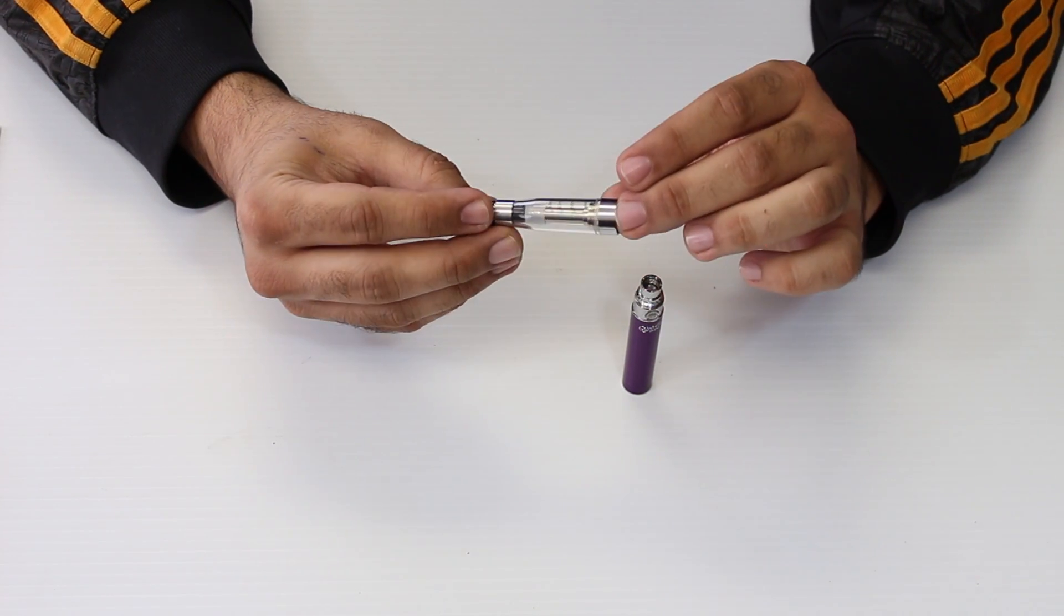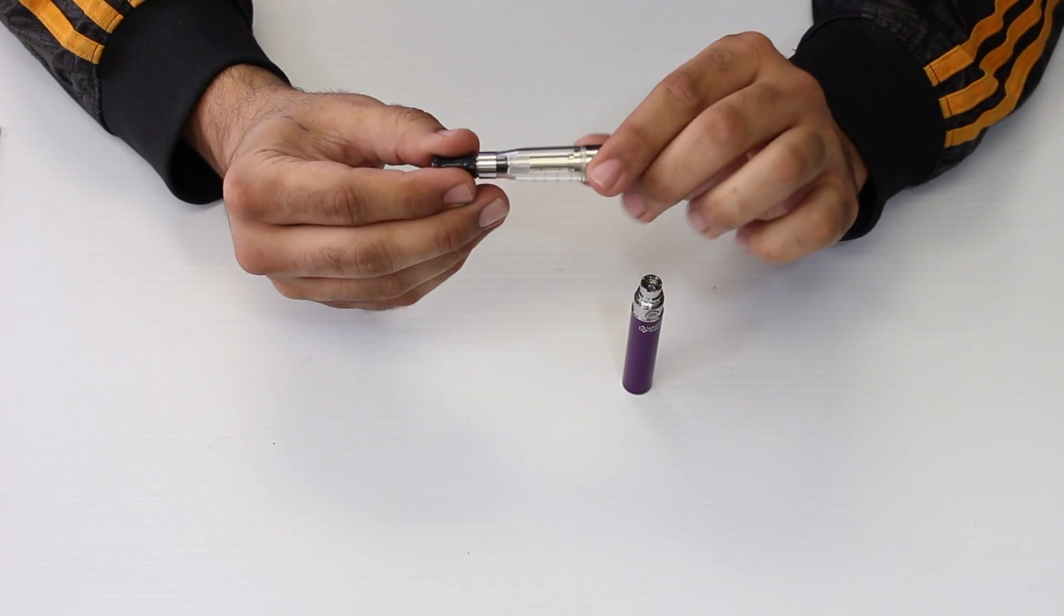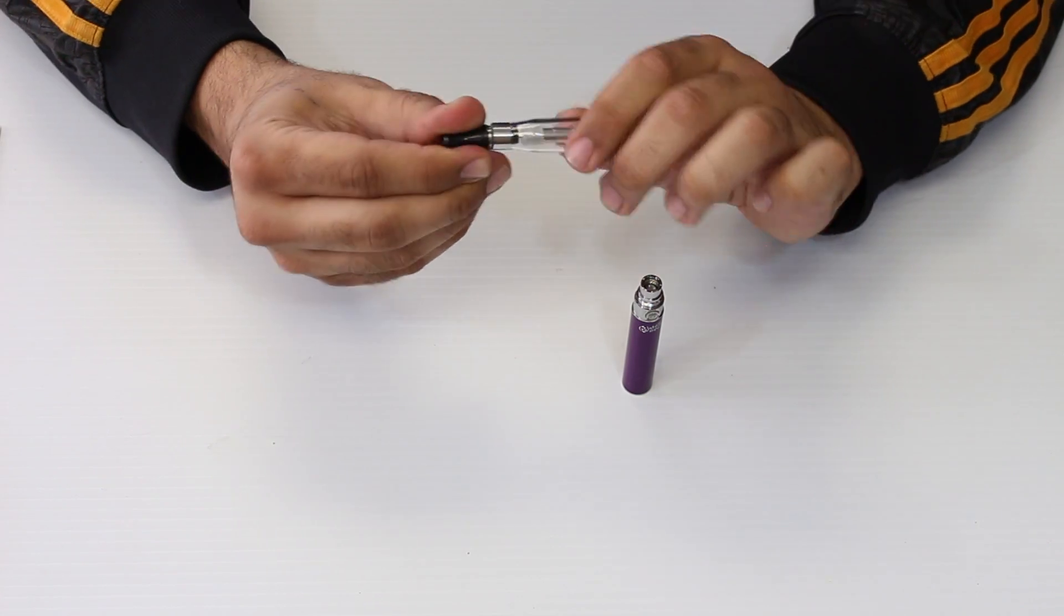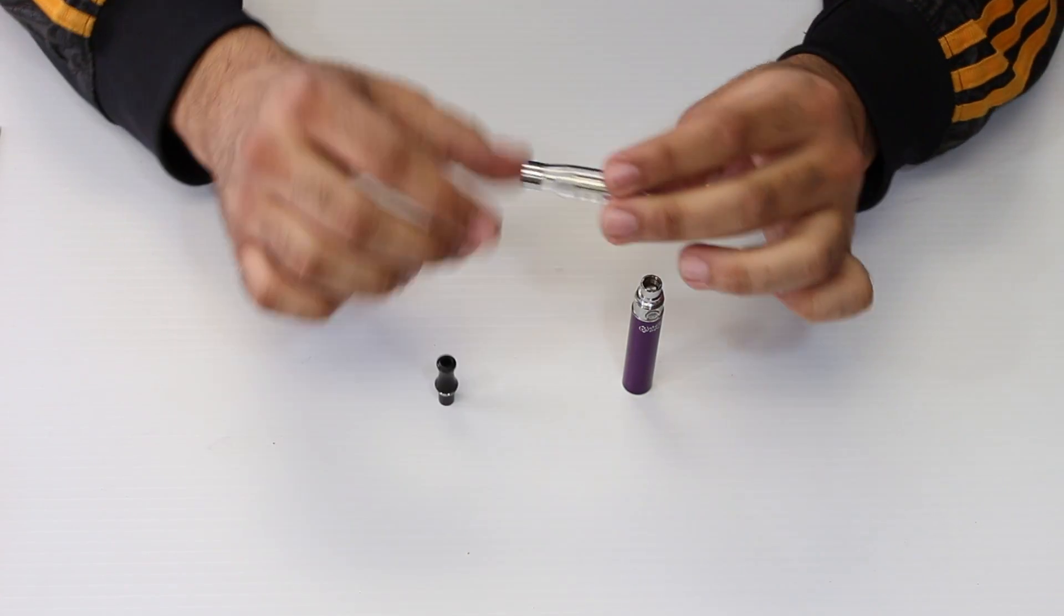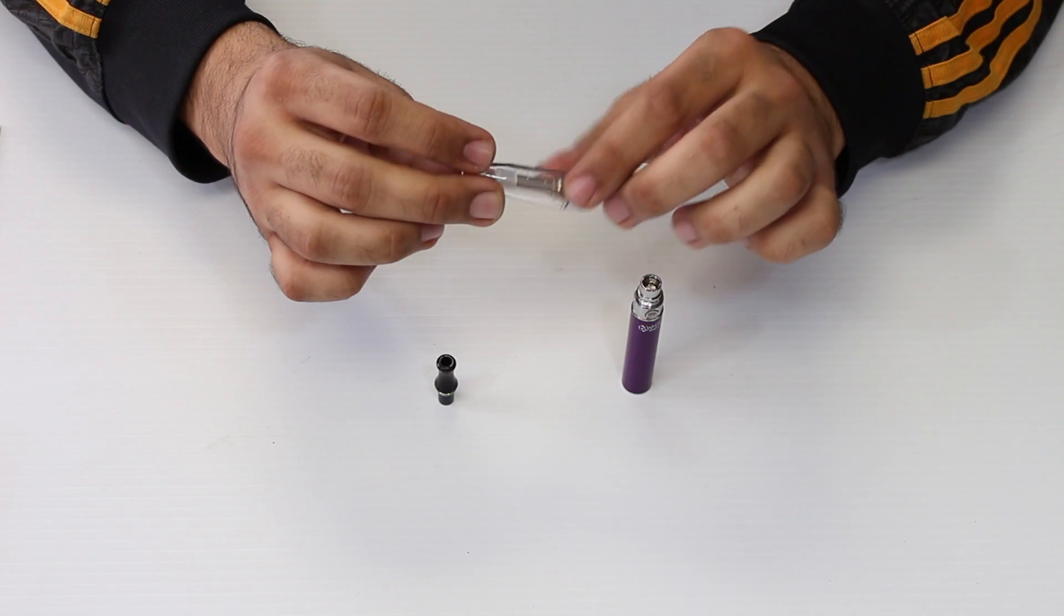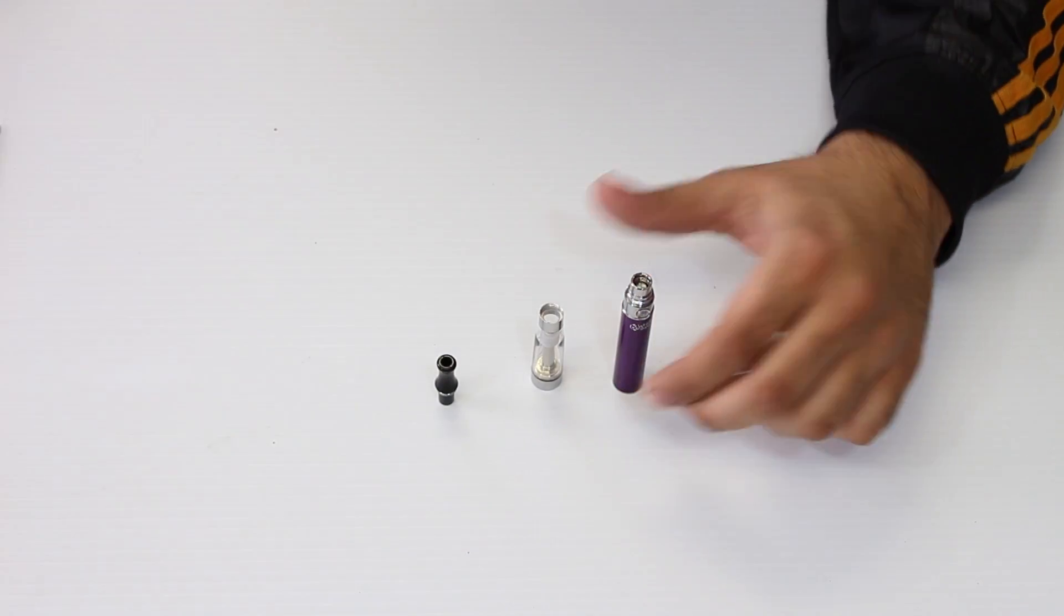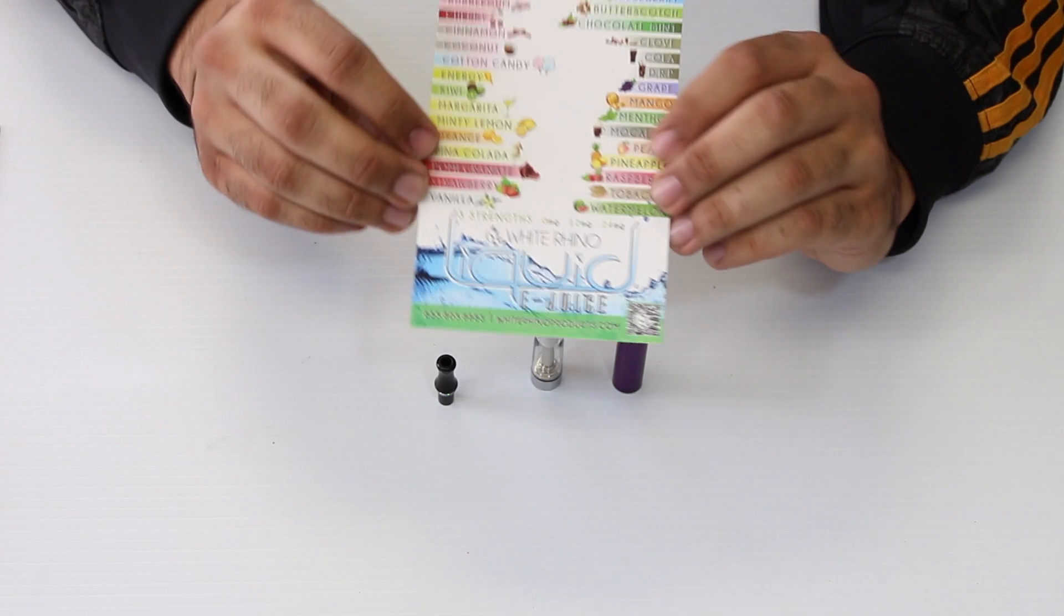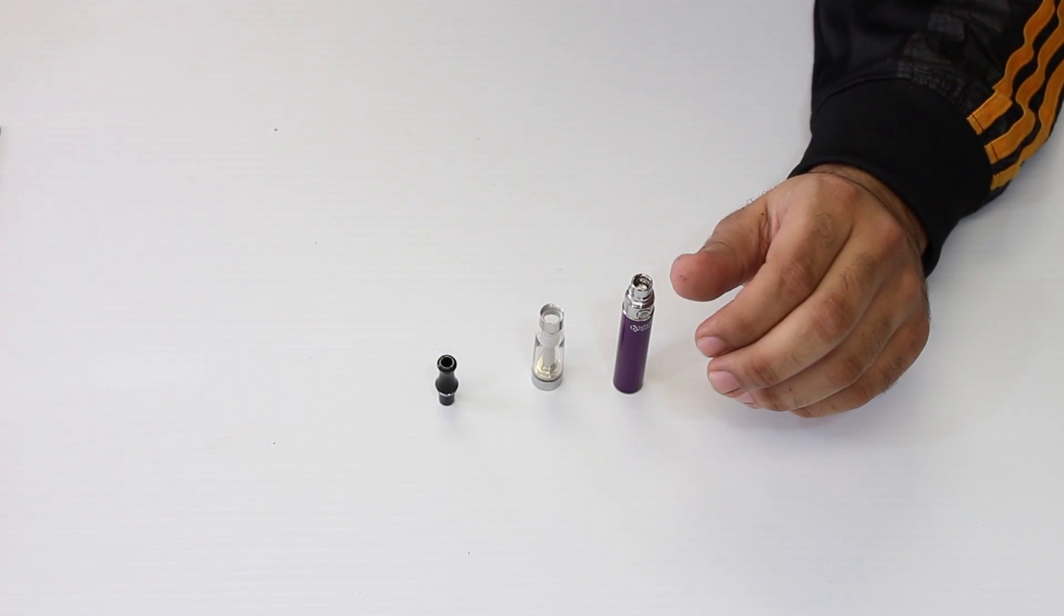Now the nice thing about our tanks is they come with invisible wicks, which tend to work a lot better. As you can see, the wicks are not visible. With White Rhino, we do offer flavors of juices - over 32 flavors.